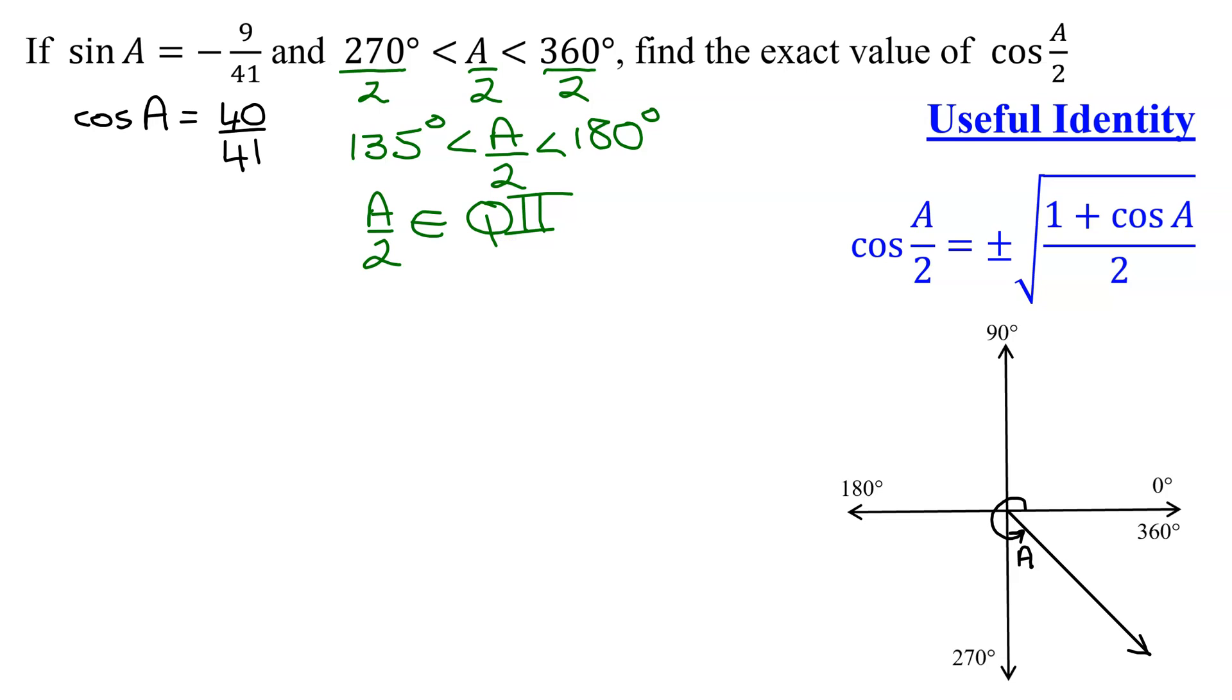My half angle is somewhere over here. So this is my angle A over 2. And what sign is the cosine function for every angle in quadrant 2? Remember, the cosine is negative in quadrant 2, because the cosine is X over R, and X in quadrant 2 is a negative number. So I'm going to have to pick the negative of the two signs.